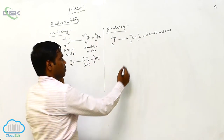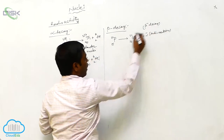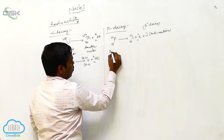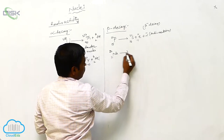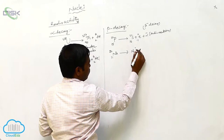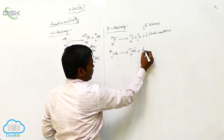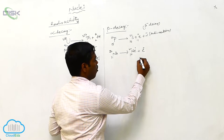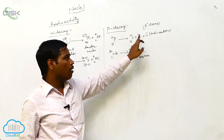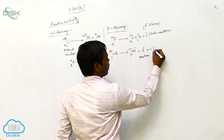This is called beta minus decay. In the beta plus decay, sodium-11-22 decays into neon-10-22 plus E-plus. This E-plus is called a positron, which has the same mass number as the electron but the charge is opposite, and it also gives one neutrino.